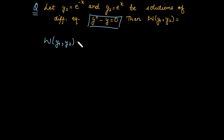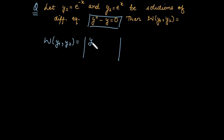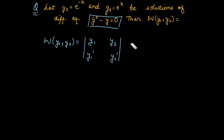The Wronskian is calculated as the determinant of a 2×2 matrix, because there are two functions. In the first row we place y1 and y2 as they are, and in the second row we place their first order derivatives.